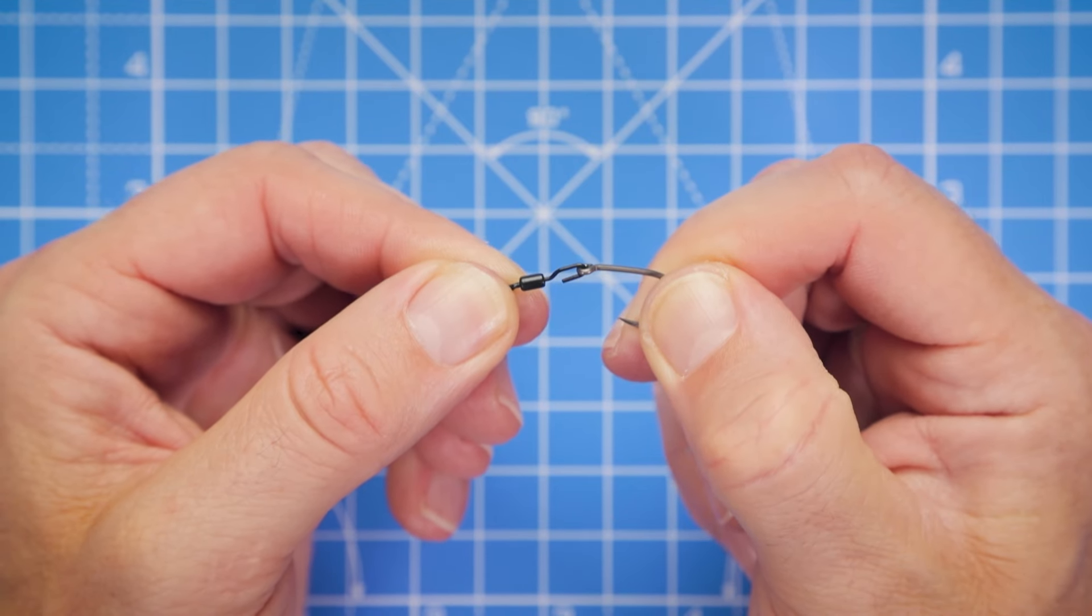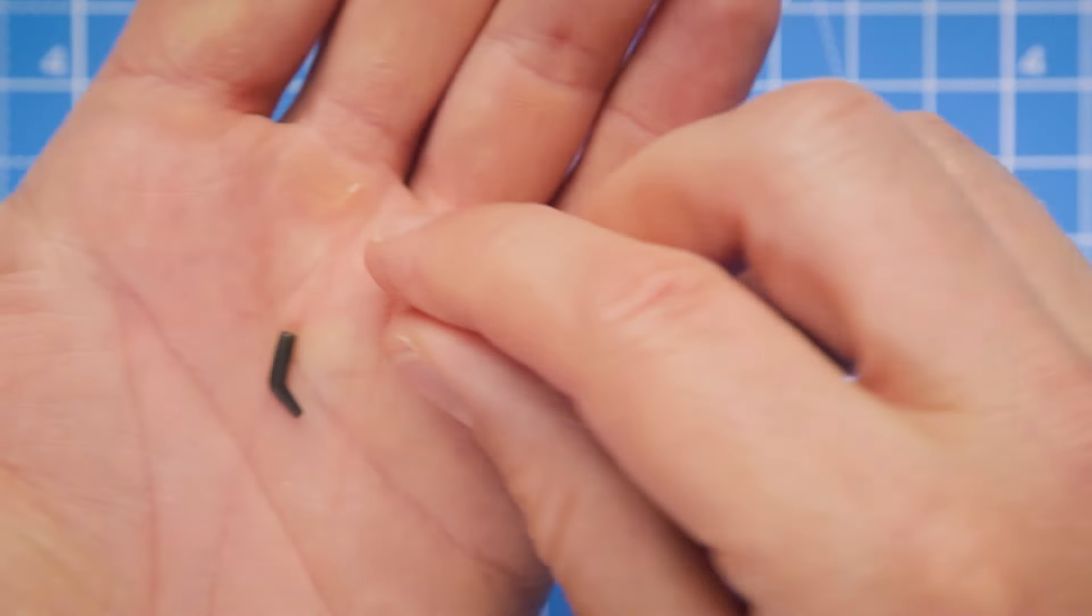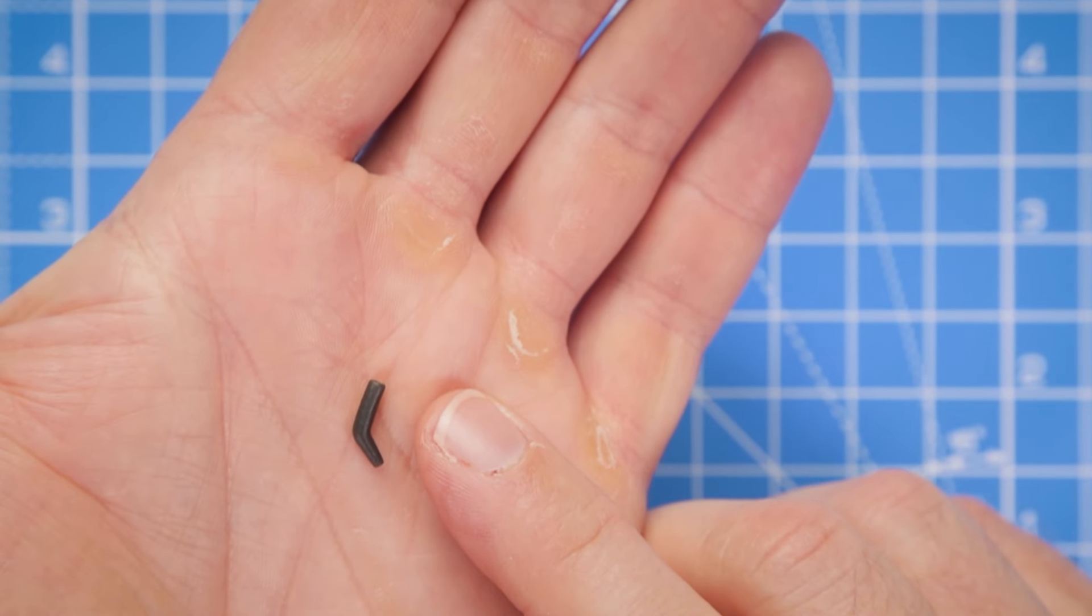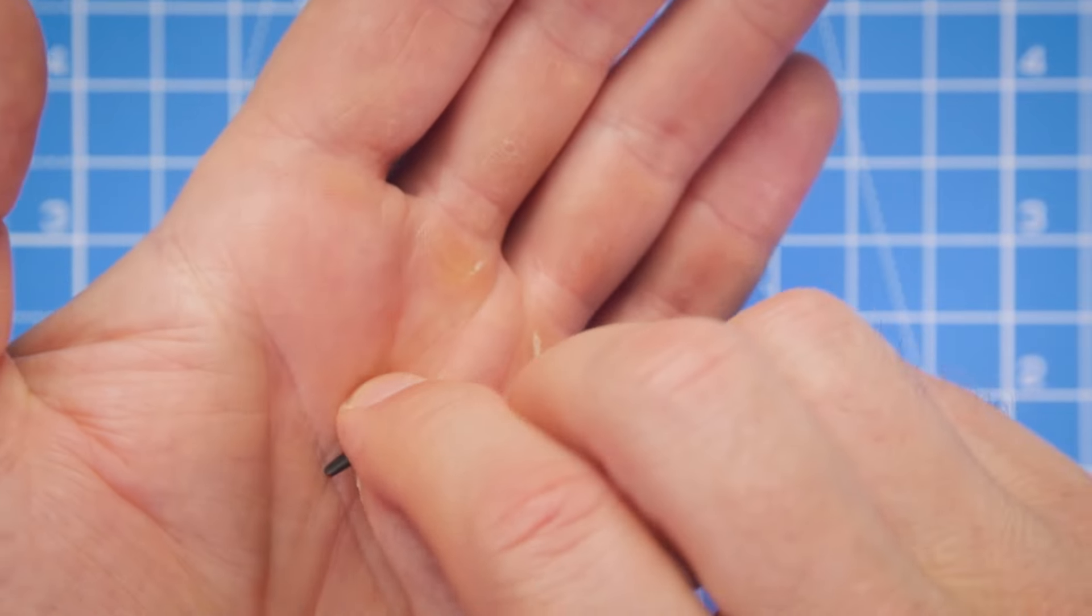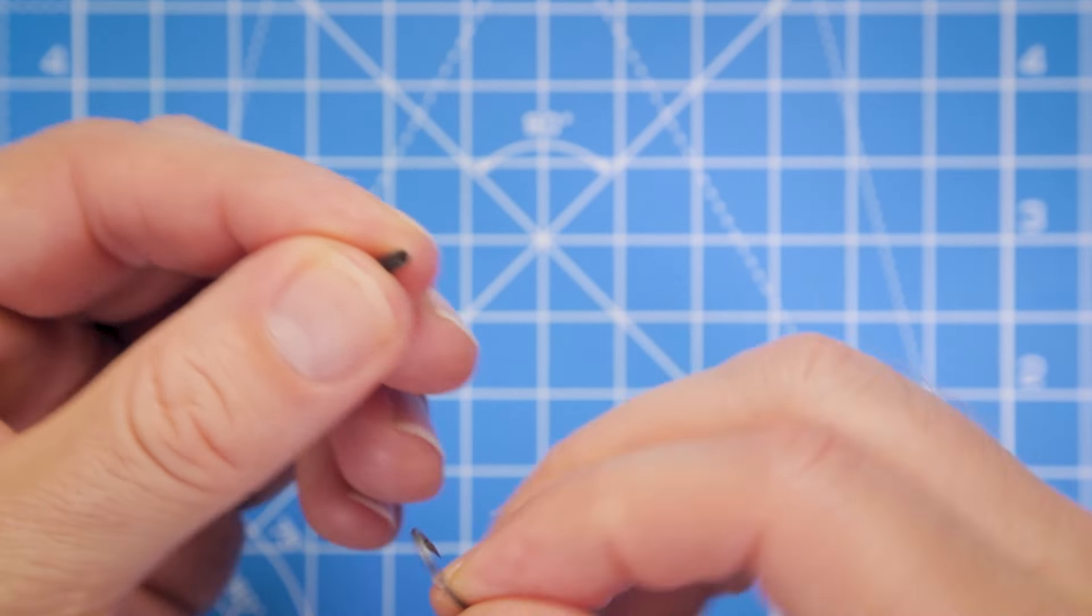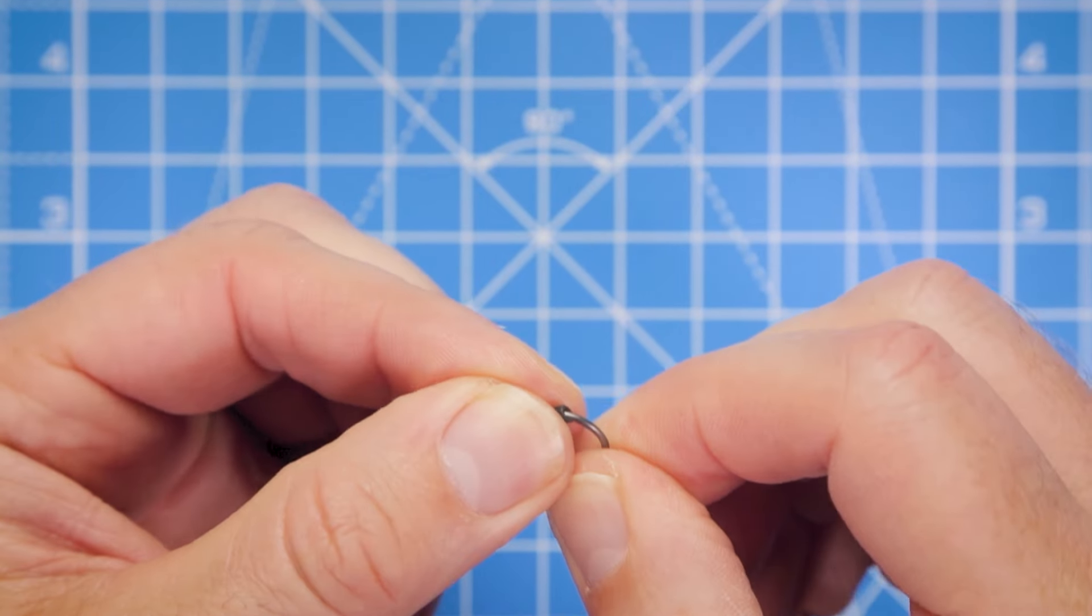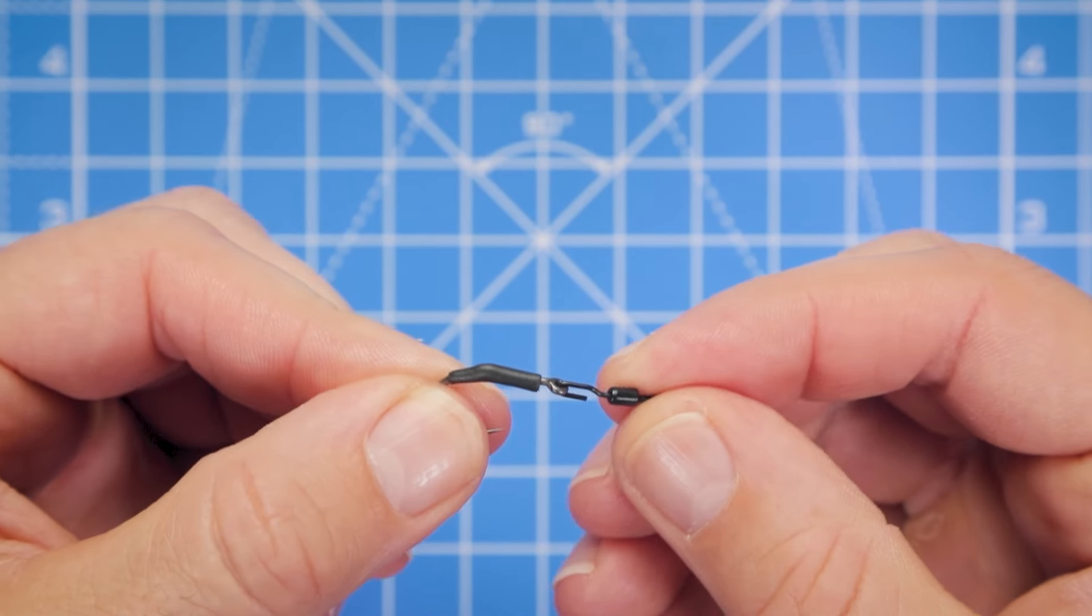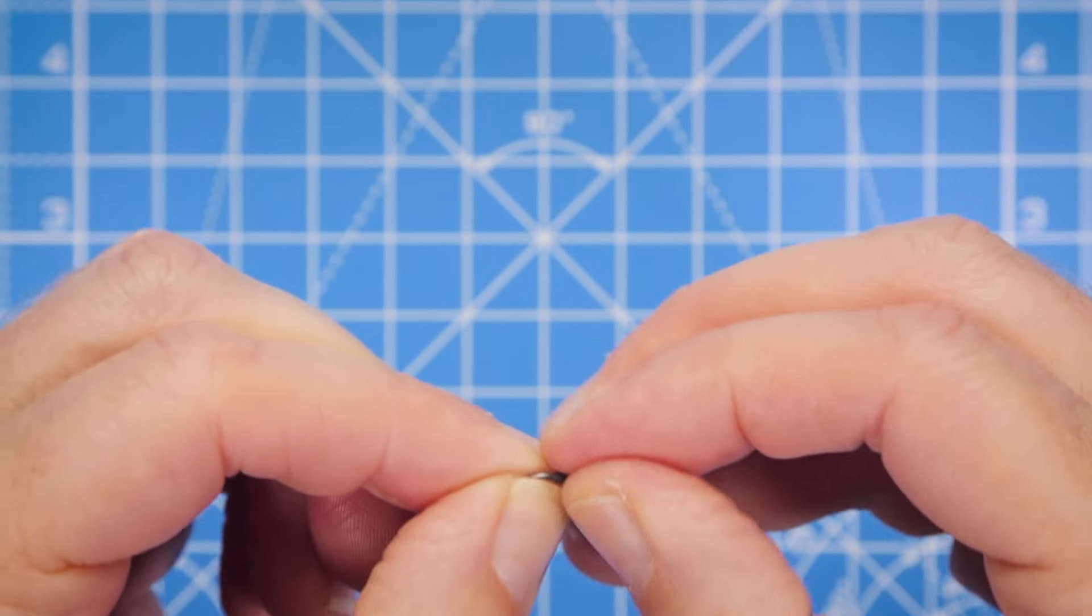The first thing that we're going to do is attach the hook eye to the spinner swivel. Next, we're going to take one of the little kickers and thread it down onto the hook around the bend. It can be a little bit fiddly sometimes when you're trying to pull it, and there is a chance that you could get the hook in your finger.